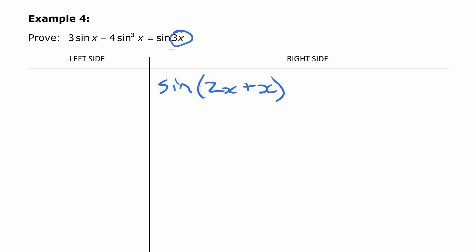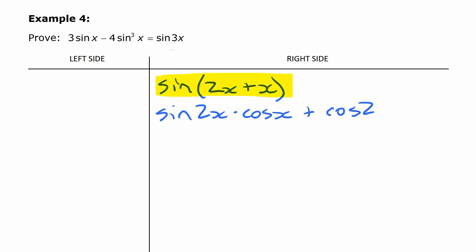3x is 2x plus x. How that helps is we can use the sum identity for sine and write that in terms of individual trig functions. That sum identity for sine says this is equal to sin of the first angle, sin 2x, times cosine of the second angle, cos x, plus cosine of the first angle, cos 2x, times sine of the second angle, sin x. So we turned sin(2x + x) into this whole expression.